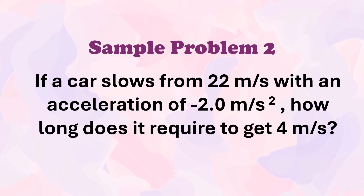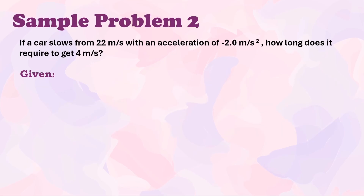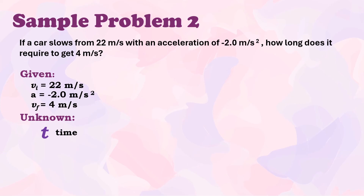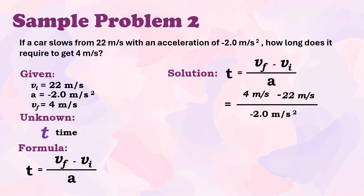Another example: If a car slows from 22 meters per second with an acceleration of negative 2 meters per second squared, how long does it take to reach 4 meters per second? Given: initial velocity = 22 m/s, acceleration = −2 m/s², final velocity = 4 m/s. The unknown is time. Using the formula — time equals final velocity minus initial velocity divided by acceleration — we get: (4 − 22) ÷ (−2) = −18 ÷ −2 = 9 seconds.